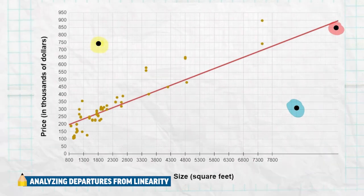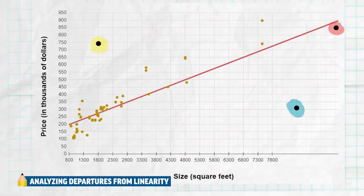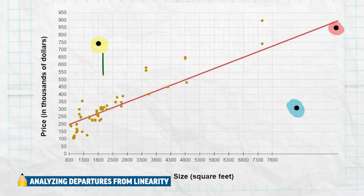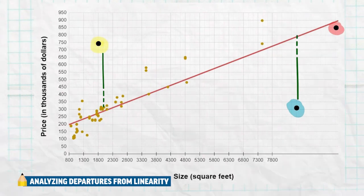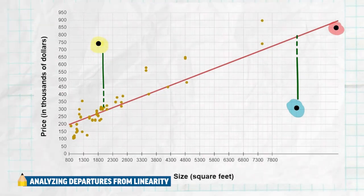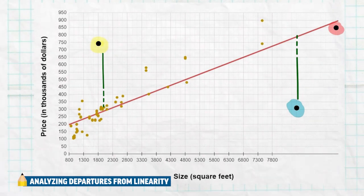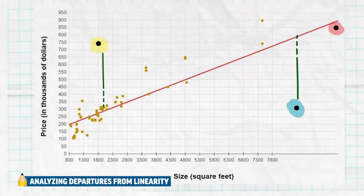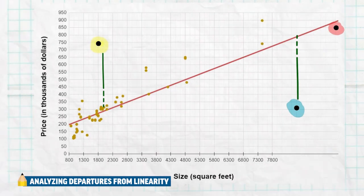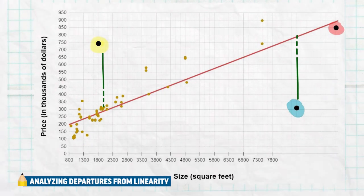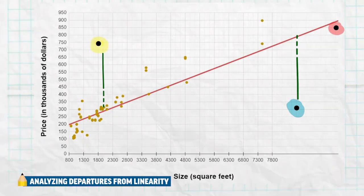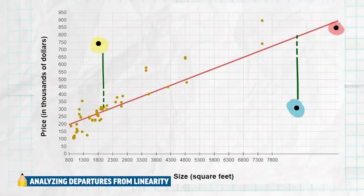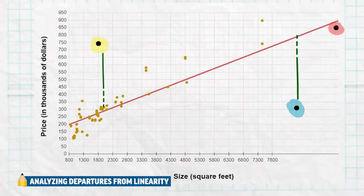Outliers in a scatter plot often have large residuals. The yellow point is going to have a huge residual value, and the blue point is going to have a huge residual value. The red point, however, has a very small residual value, again showing that when a point is an outlier in both directions, it's technically not an outlier overall for that scatter plot because it fits the pattern. If the yellow or blue points were added, it's going to weaken my correlation, since they have large residuals that don't fit the pattern. If I remove them, my correlation is going to get stronger.